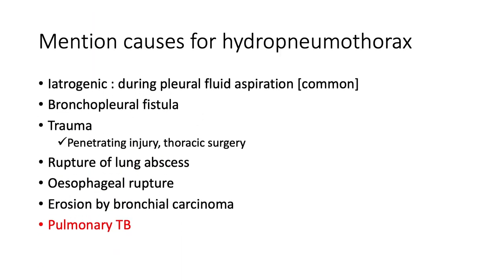Causes of hydropneumothorax include iatrogenic (especially during pleural fluid aspiration), broncopleural fistula, traumatic penetrating injury or thoracic surgery, rupture of a lung abscess, oesophageal rupture, erosion by bronchial carcinoma, and, of course, TB.